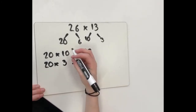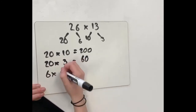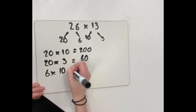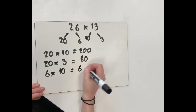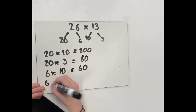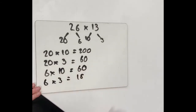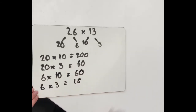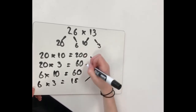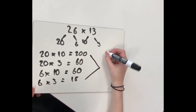I've took 6 and 10 and the answer is 60 as well, and I've took 6 times 3 and the answer is 18. Now we add it all together and your answer should be 338.